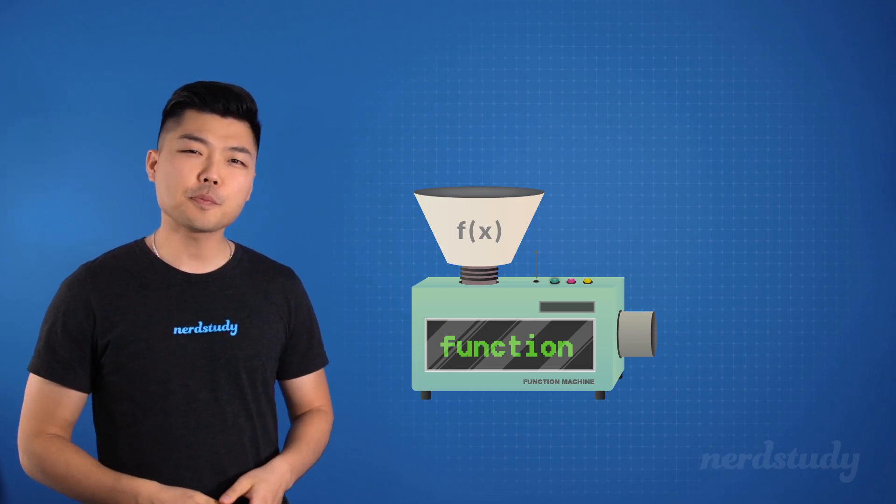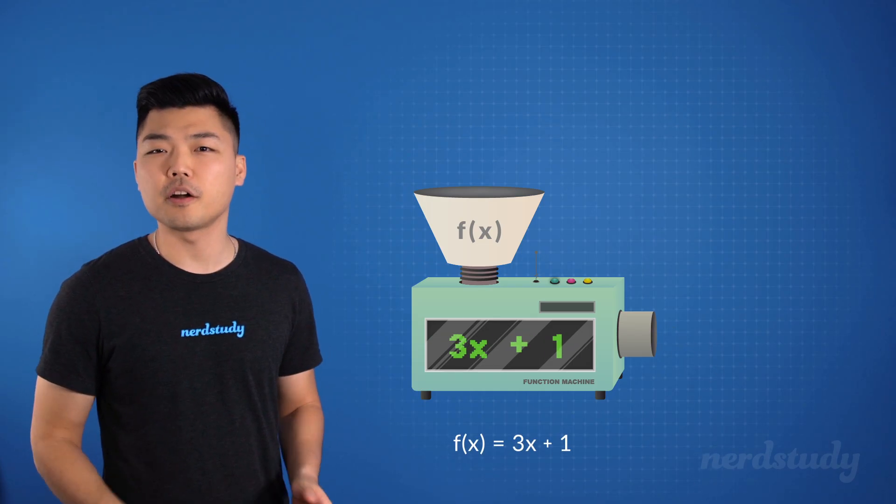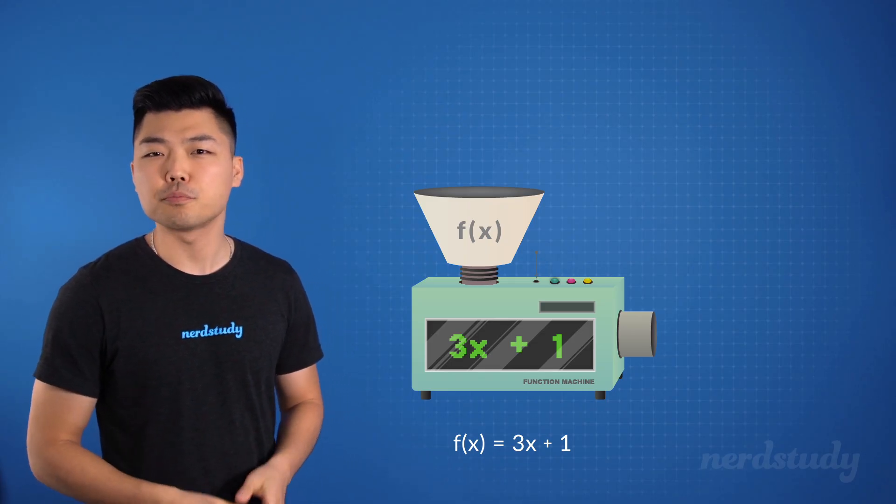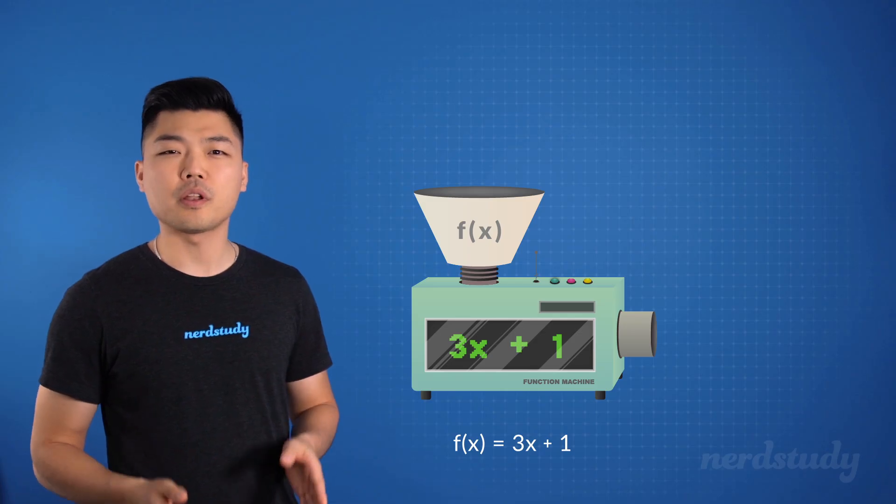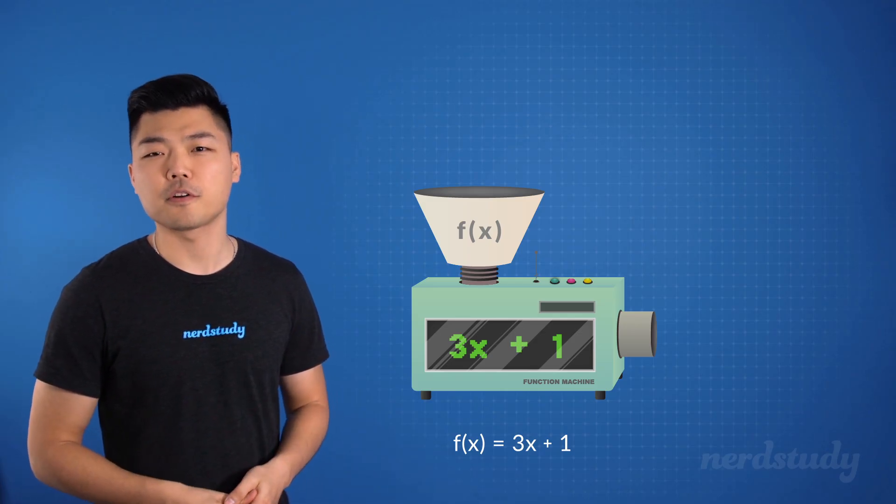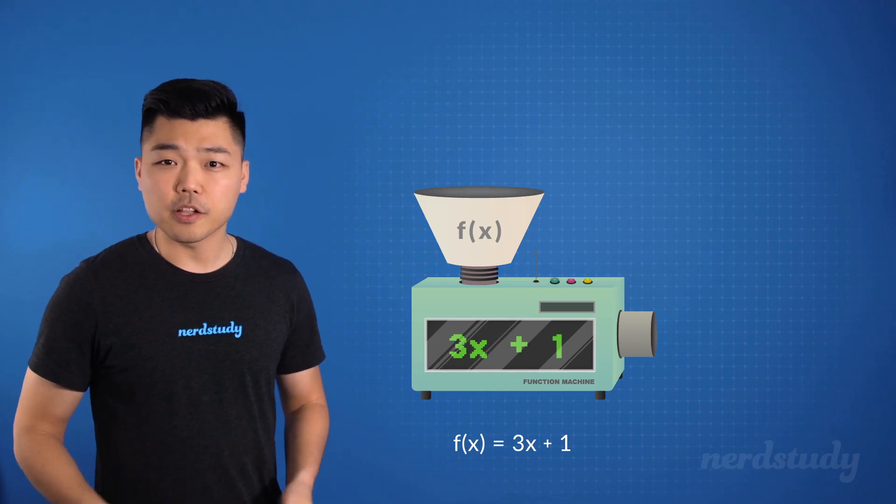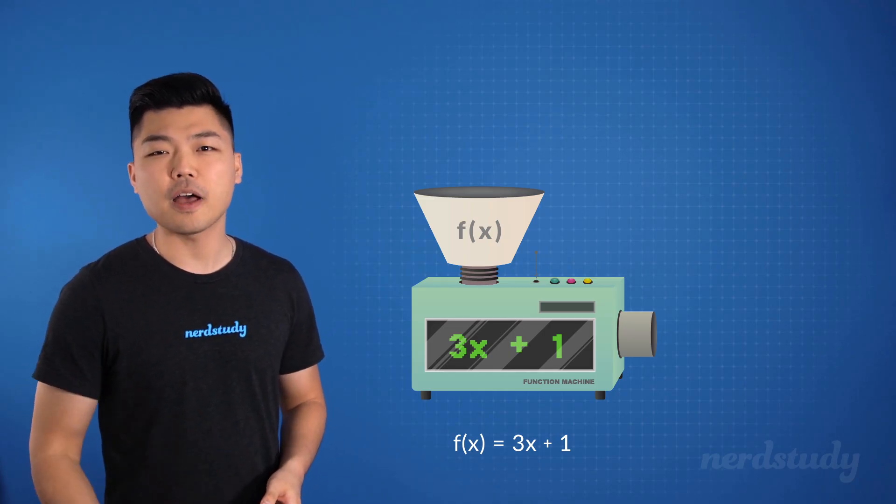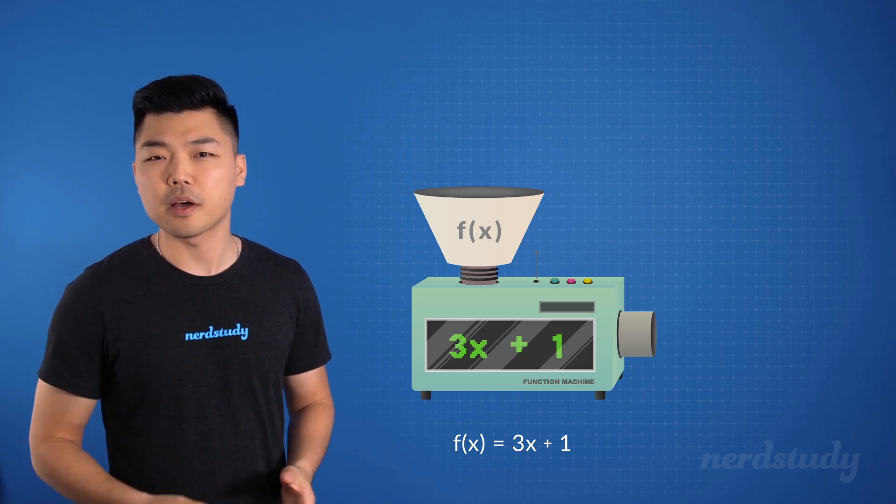So let's pull up our example of the linear function that we looked at earlier and try to apply it to the factory machine analogy to break down what happens when we input values into our function. Now whatever x value we input into our function, it will produce a final value after being calculated by the equation.